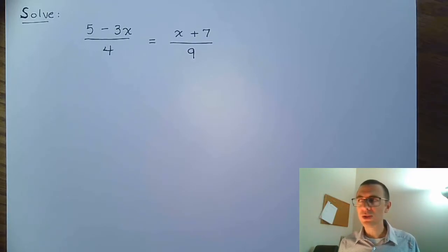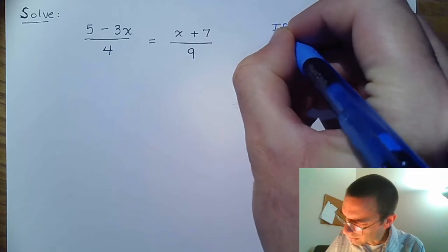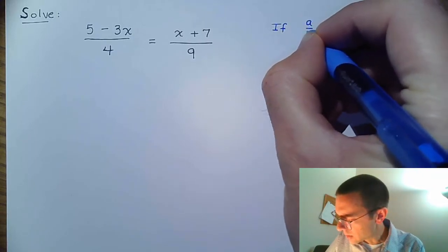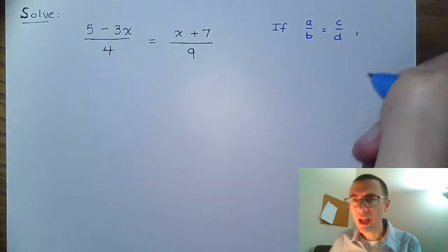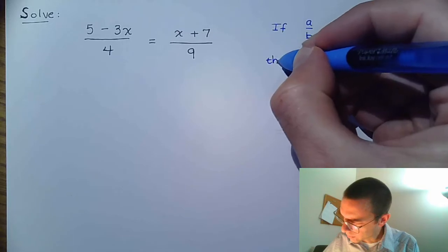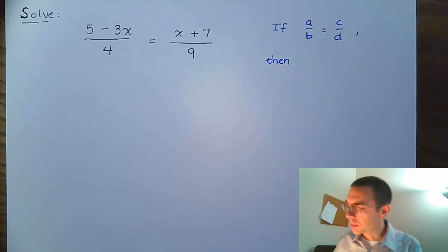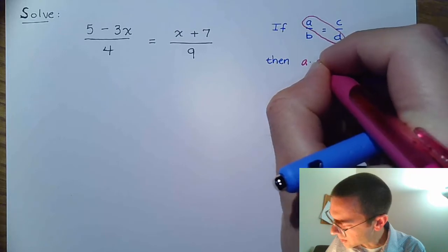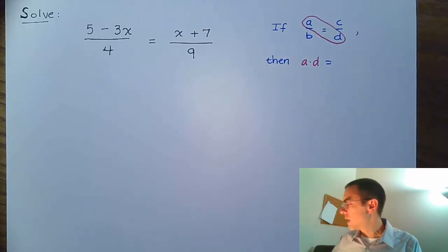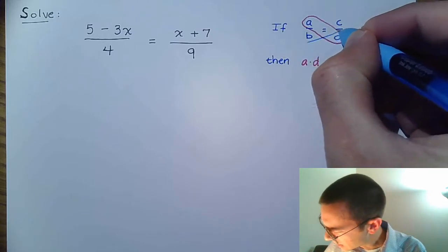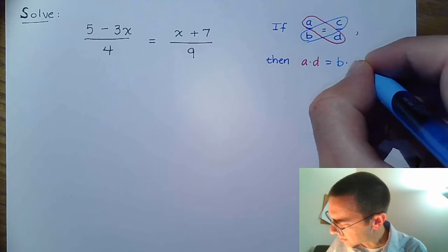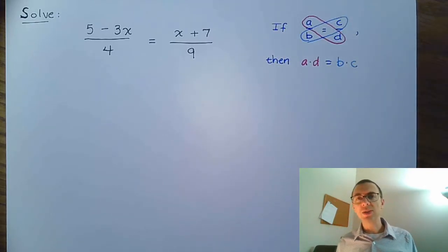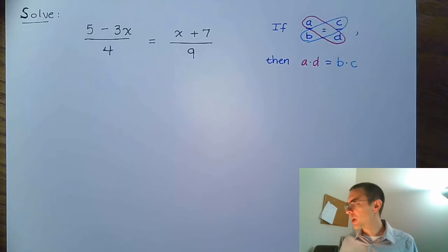I know a lot of you don't like fractions, so let's talk about what we can do. If you have a fraction equal to a fraction, that means we have a proportion, and in a proportion cross products are going to be equal. So the product of a times d is going to equal the product of b times c. This allows us to rewrite the equation without fractions, and that's a pretty simple problem after that.